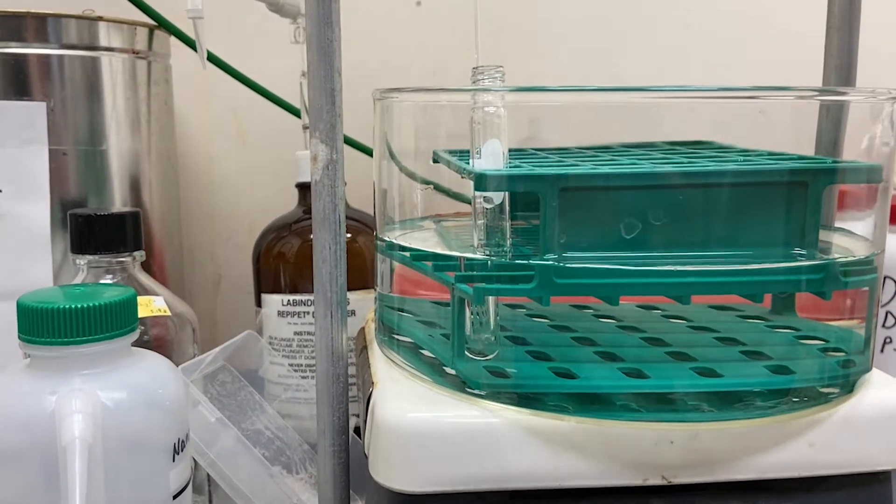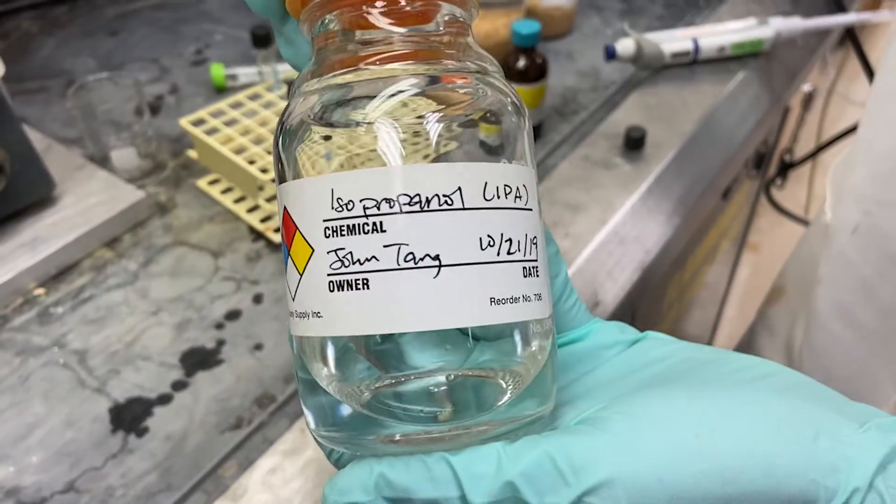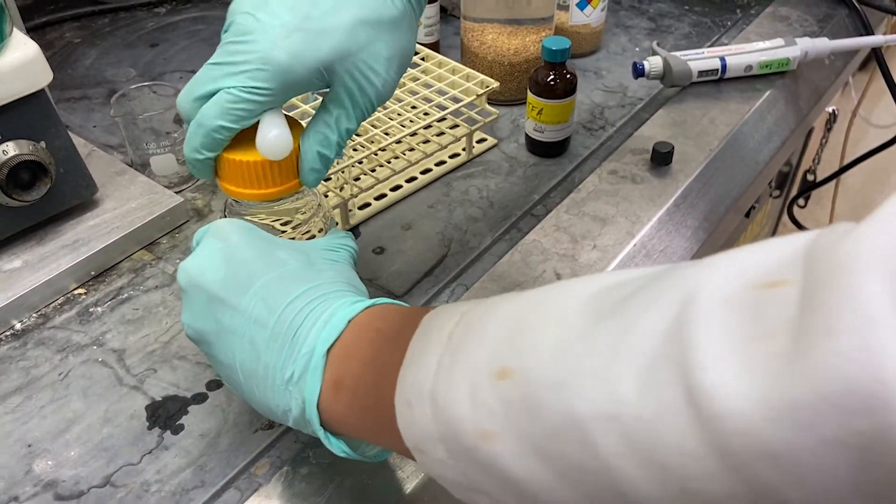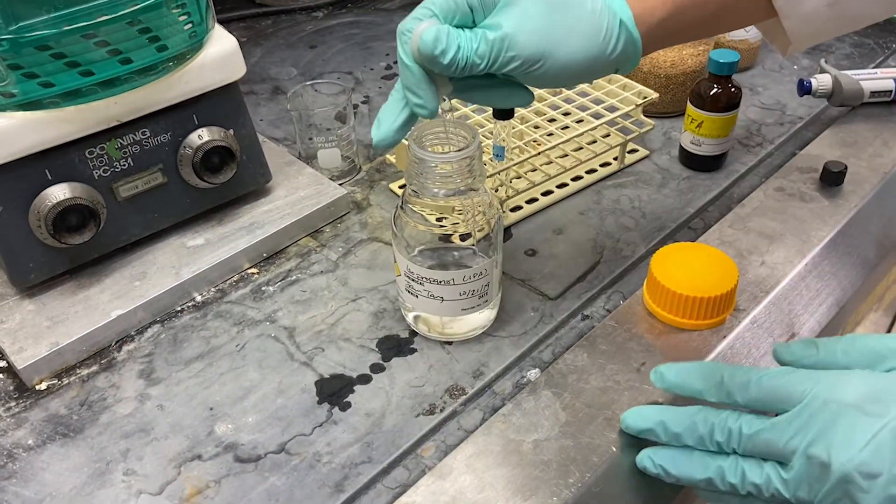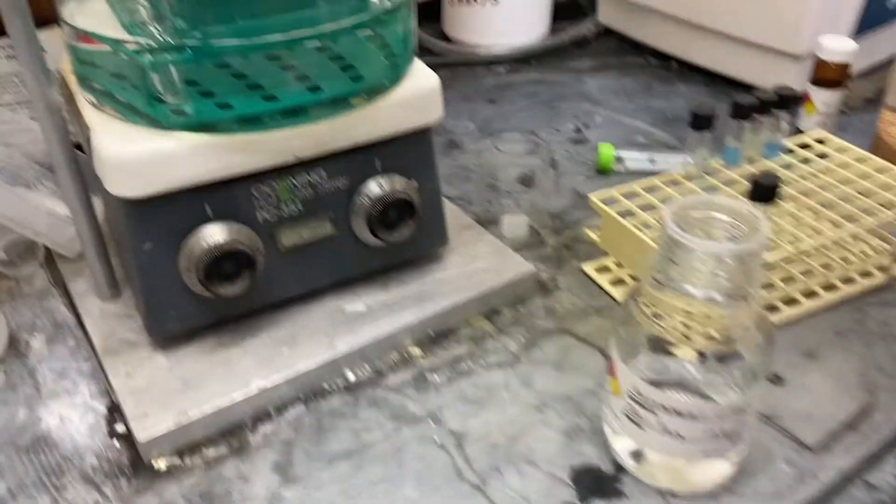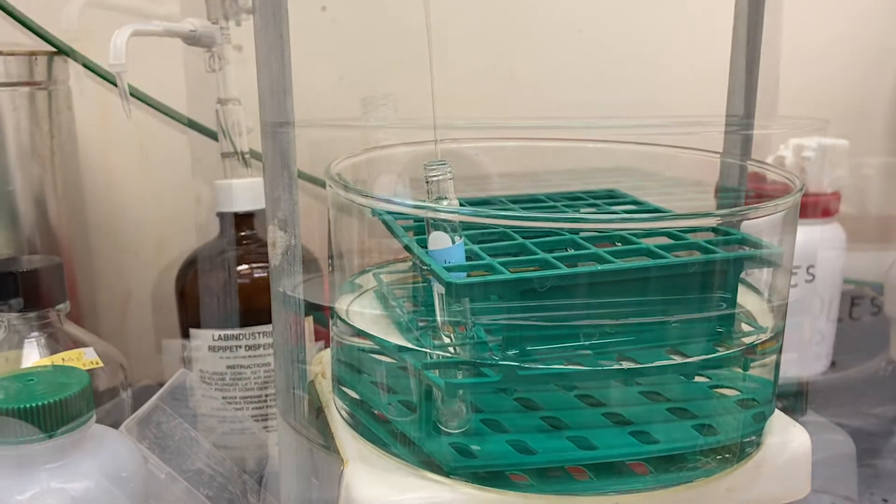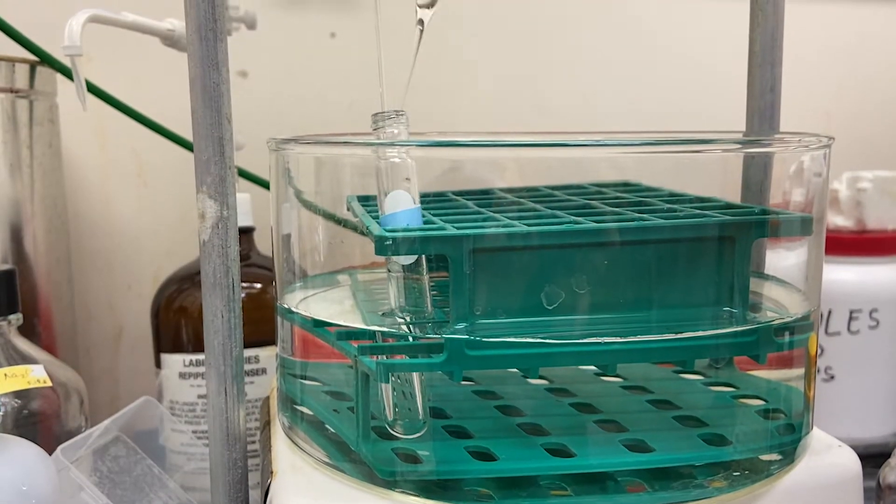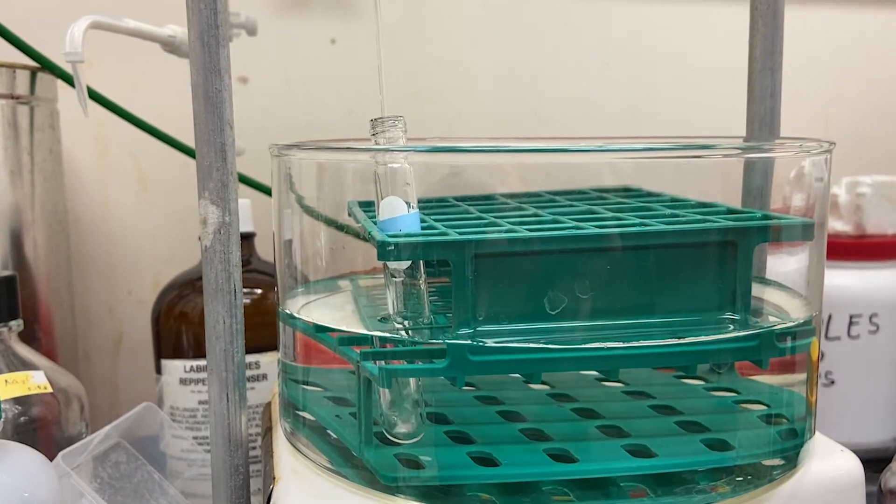400 microliters of isopropanol is added to the sample and dried down two separate times to ensure all the acid is removed. It is important to ensure the sample is dried down and the acid is removed because the next step, which is a reduction, requires basic conditions.